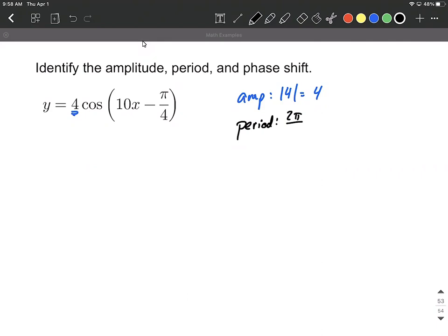What we want to do is this multiple on the inside, it's going to be the original period divided by that number. So in our case 2 pi over 10, which works out to be pi over 5.